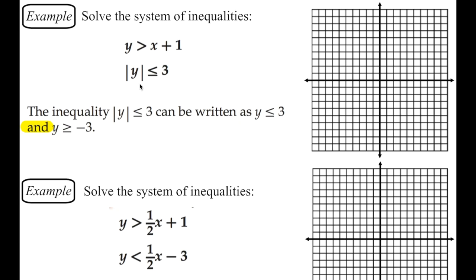All of the absolute values that we've graphed before have given us a v-shaped graph, and that's because we had an x and a y variable. Now this one is just the y variable, so the absolute value here, we can write that as two inequalities, and I have that in here in your notes. We can write that as y is less than or equal to 3, and that's the intersection or the area between that one and y is greater than or equal to negative 3. So we do those two scenarios here, and then we also have the y greater than x plus 1.